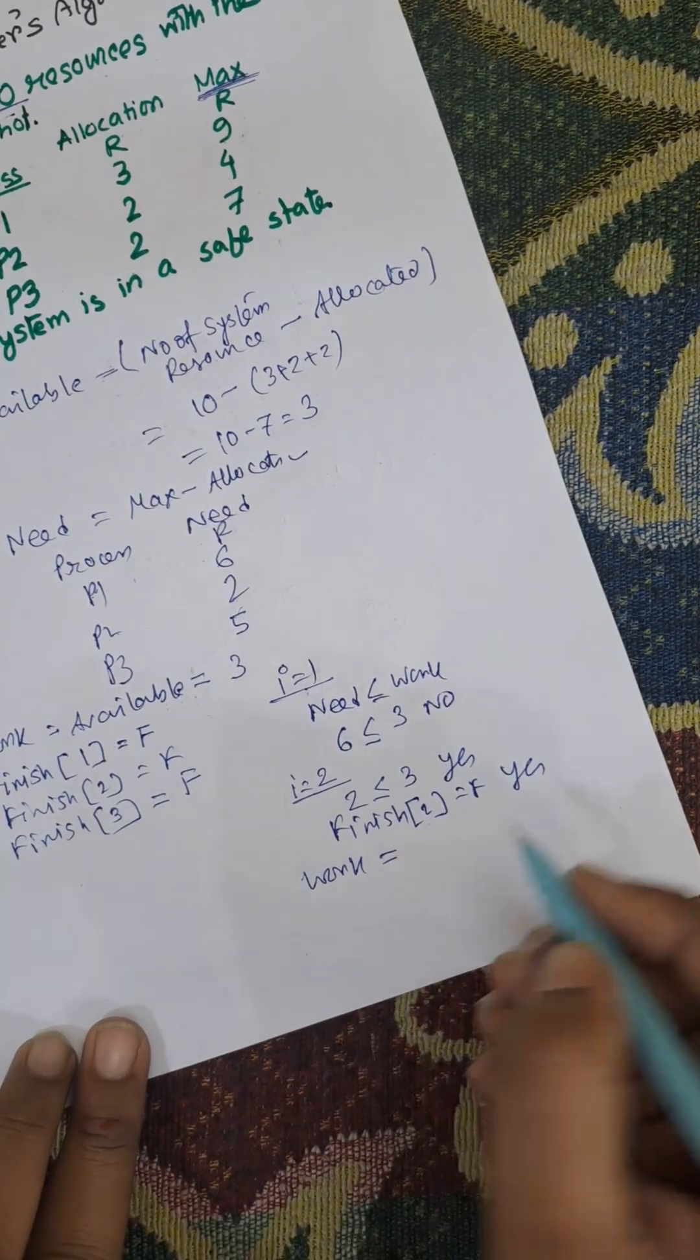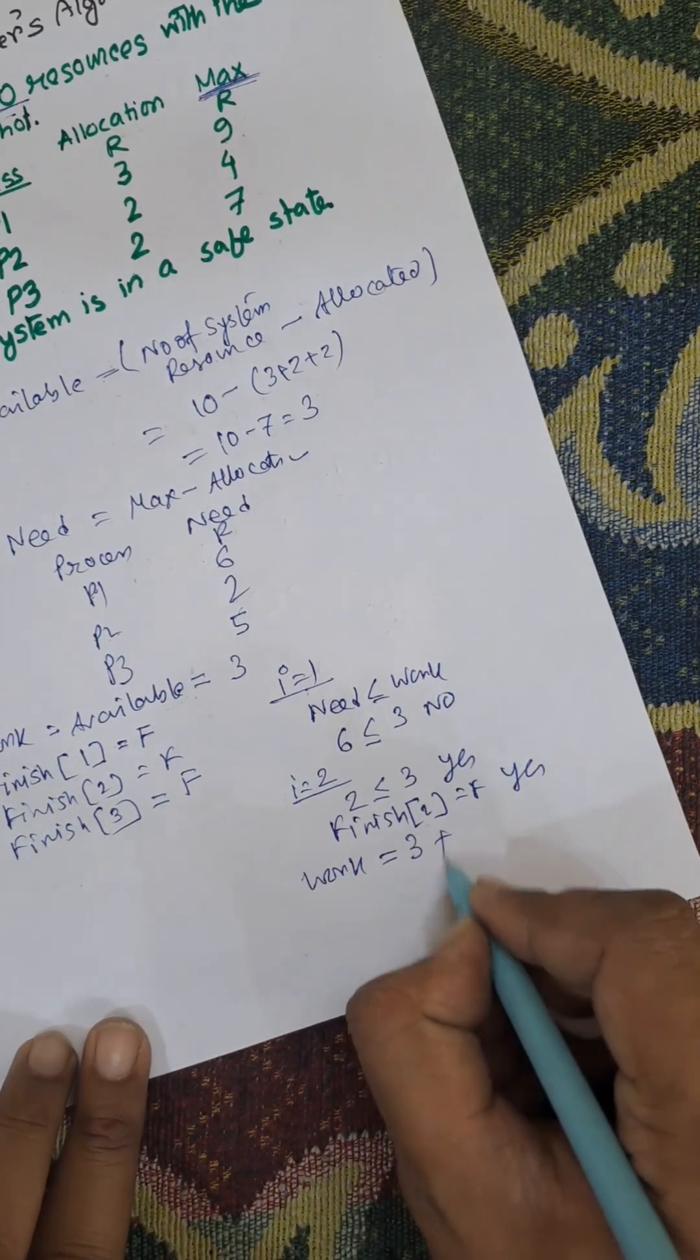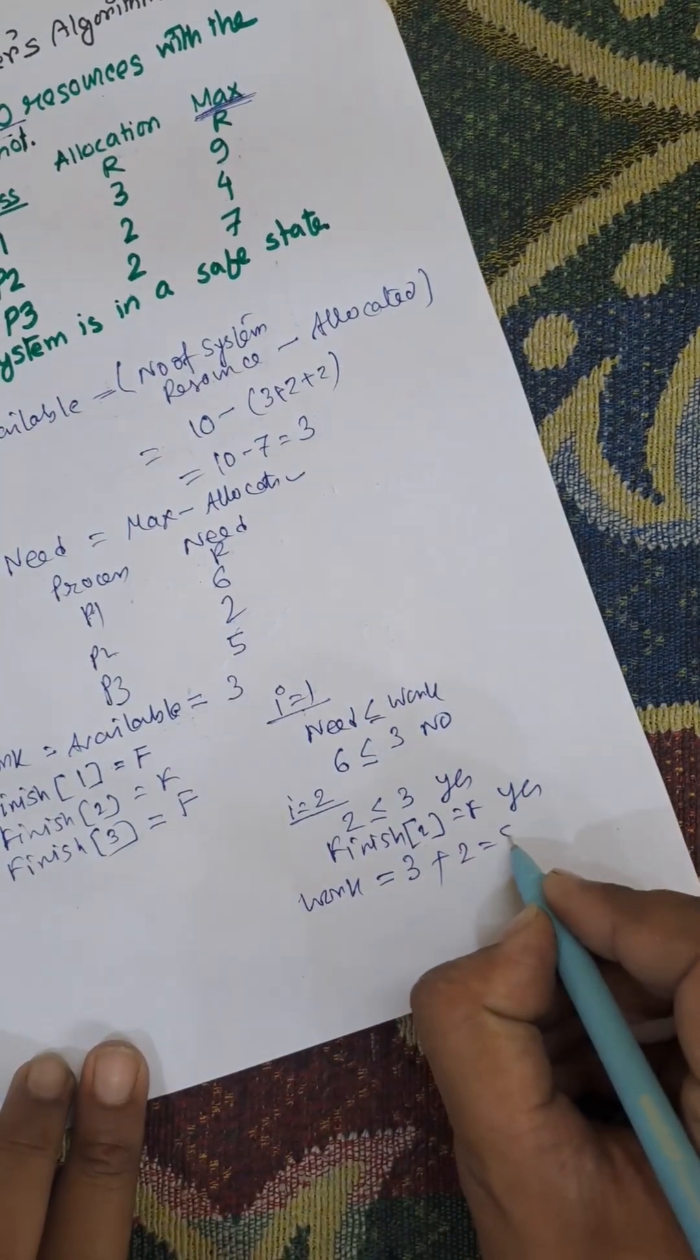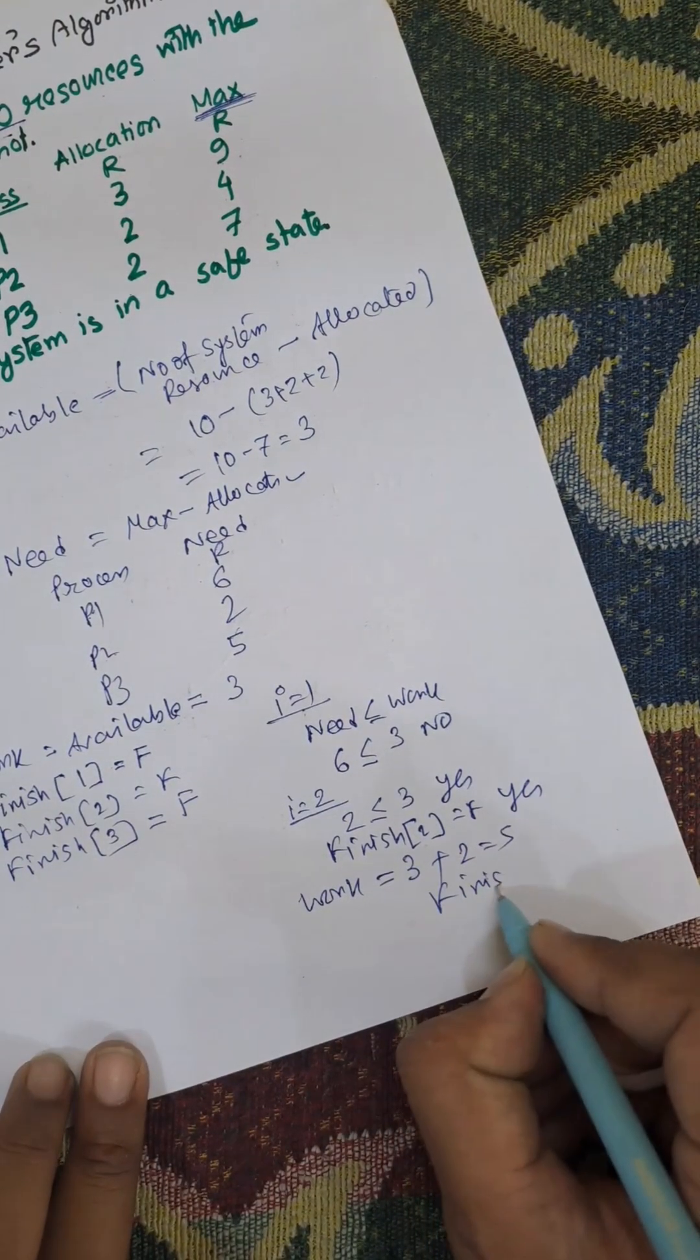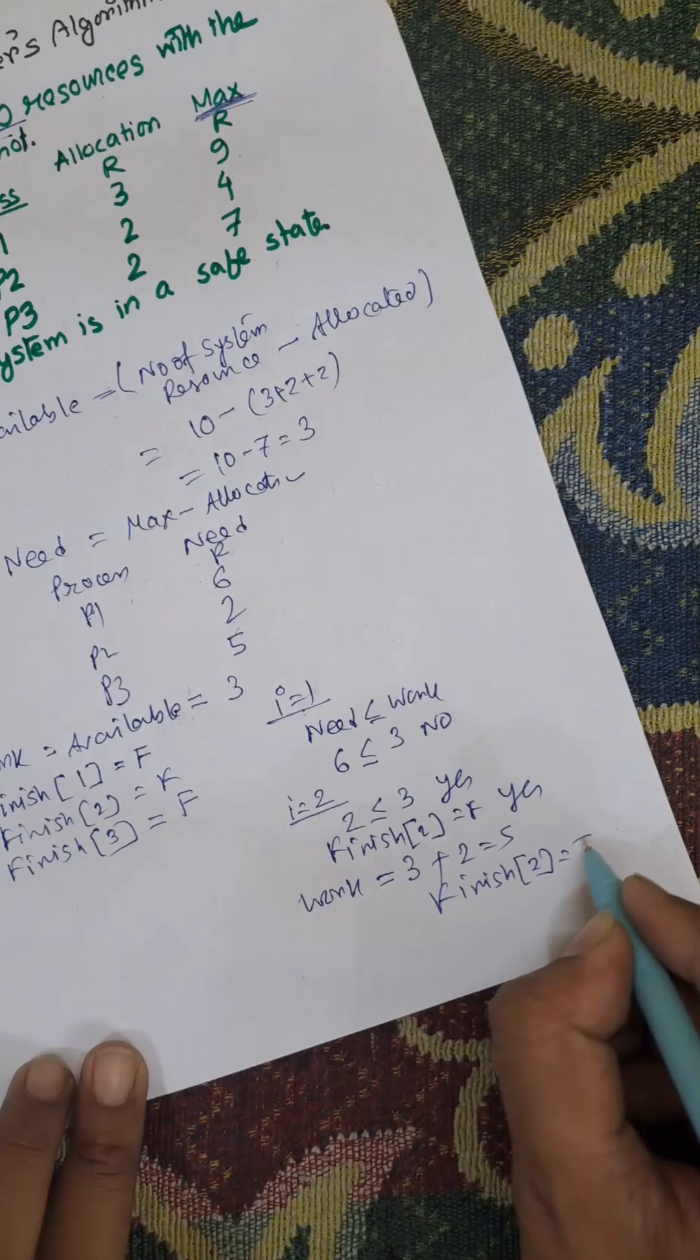Yes means work equals work plus allocation. Work equals 3 plus allocation, allocation of 2, that equals 5. Now finish 2 is true.